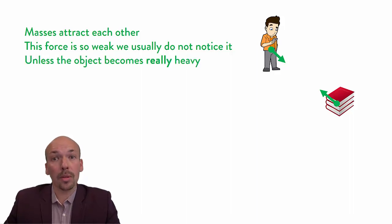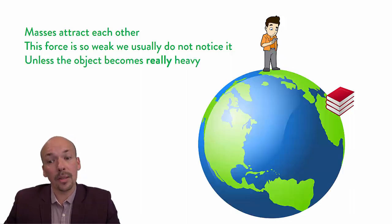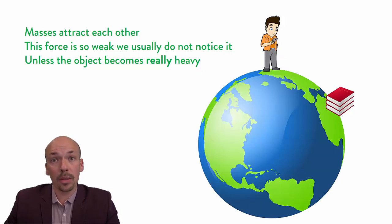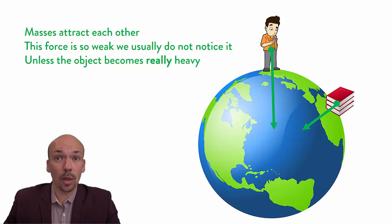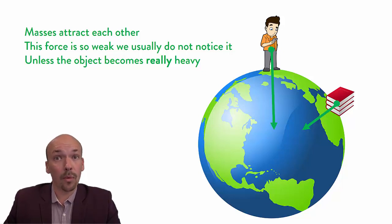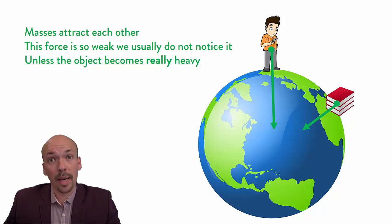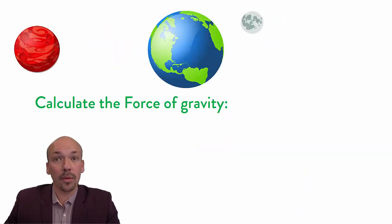We do notice them when the mass becomes really, really heavy — for instance, the Earth. The Earth is so heavy that we do notice the attraction from the Earth, which is attracting us downwards. So these books are attracted down to the center of the Earth, and so are we. This is called the gravitational force, which is because of the Earth being so heavy.